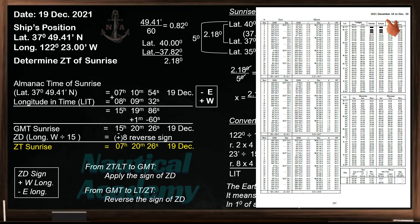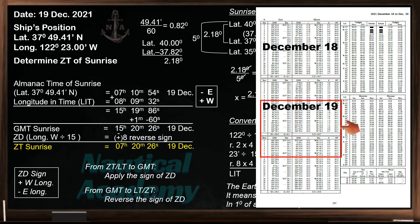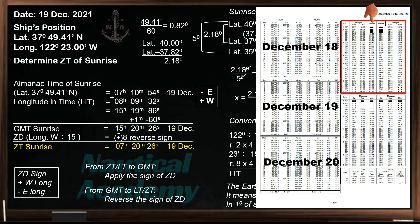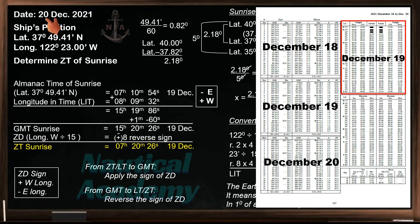In the upper right corner, we can see that this page covers three days: December 18th, 19th, and 20th of the year 2021. We can find the local mean time of sunrise and sunset here. The data here is in the middle day of the daily page, which is December 19th. Since we need to find the zone time of sunrise on 20th of December, which is not in the middle day of the daily page, an additional step is required compared to those in the middle day.